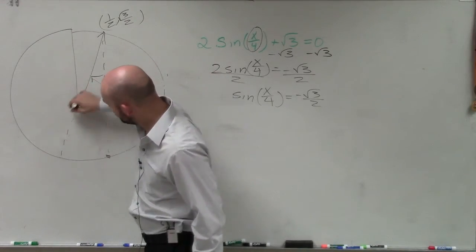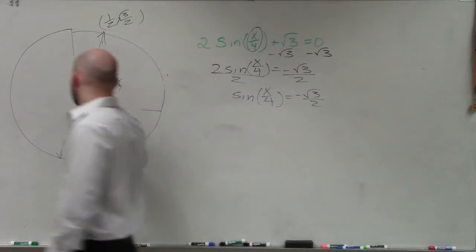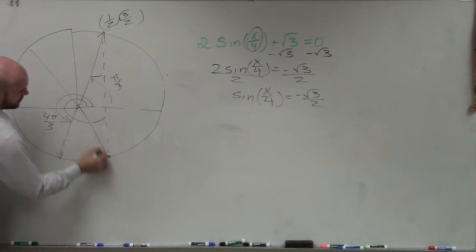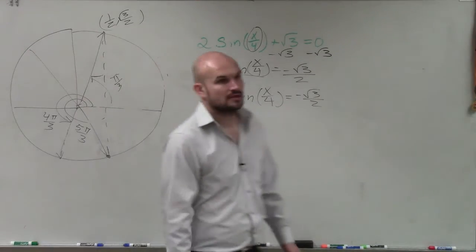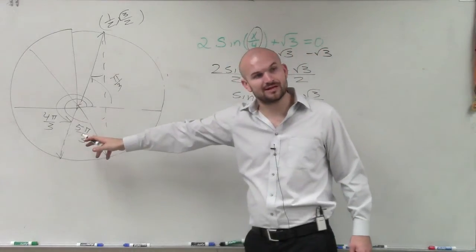So that means it has to be in the y-coordinate. If this is pi over 3, that's 2 pi over 3, 3 pi over 3. That means my next angle is 4 pi over 3 and 5 pi over 3. So this is when the angle is positive. These two points are when the angle is negative.